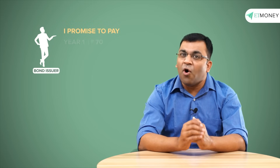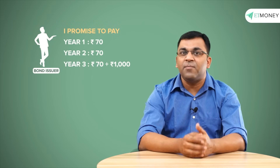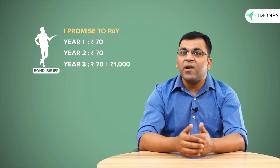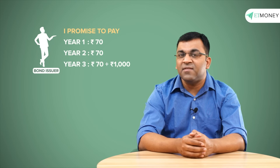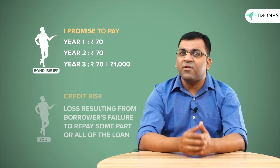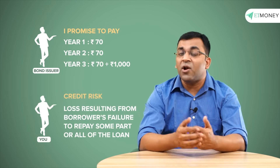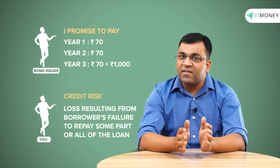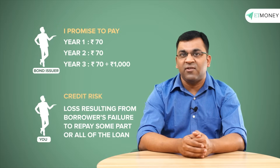Now there are a few things you need to know here. What the bond issuer is offering is merely a promise — a promise that he will pay you a coupon of 70 rupees for all three years and of course return back the principal of a thousand rupees. A promise means there is no 100% guarantee, which means there is definitely some risk on account of the bond issuer not having enough money to pay some or the entire amount. This is what we refer to as the credit risk.